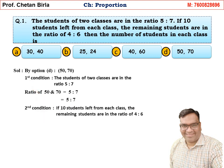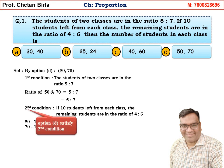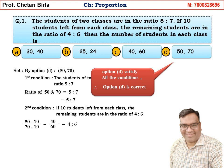Now the second condition: if 10 students left from each class, the remaining students are in the ratio 4 is to 6. Students are 50 and 70; from both classes 10 students leave. So (50 − 10) / (70 − 10) = 40/60, which is equal to 4 is to 6. Both conditions are satisfied, so Option D is the correct answer.